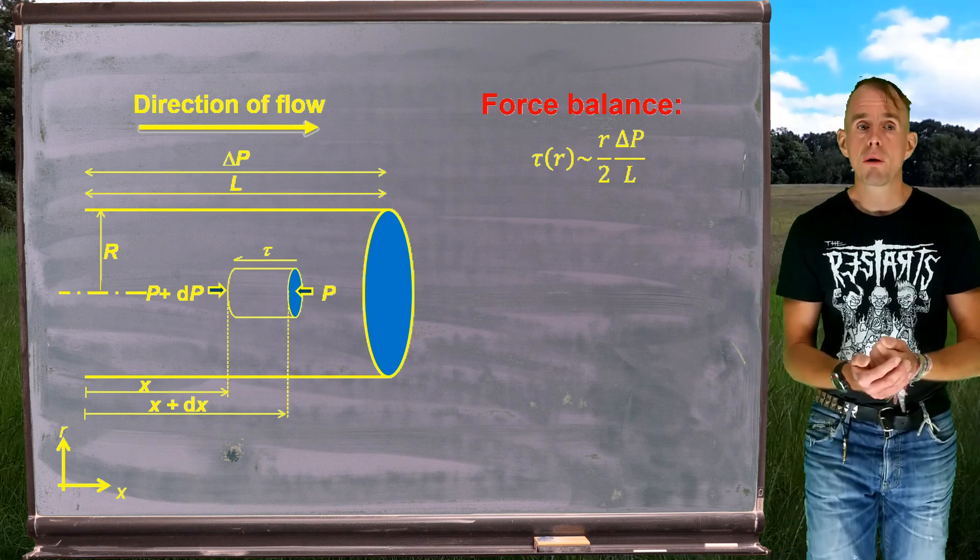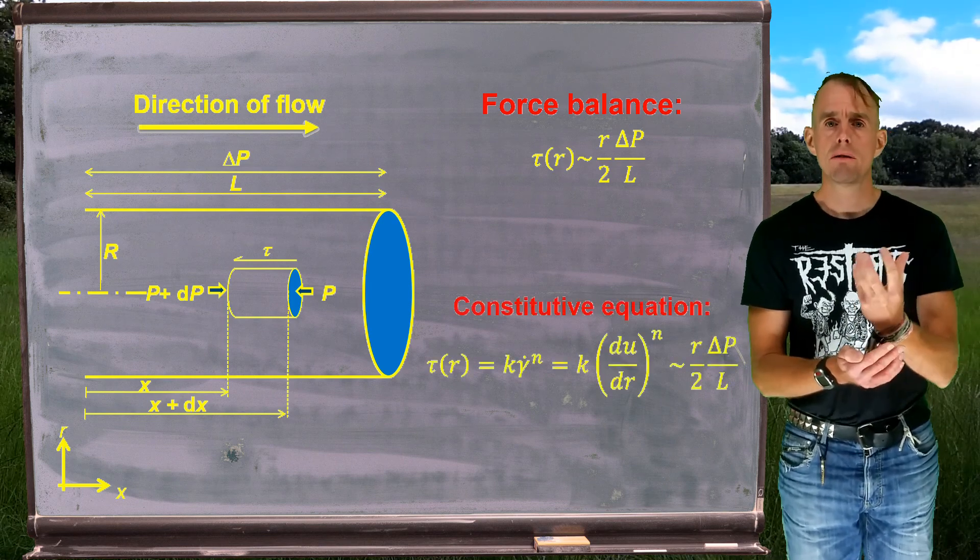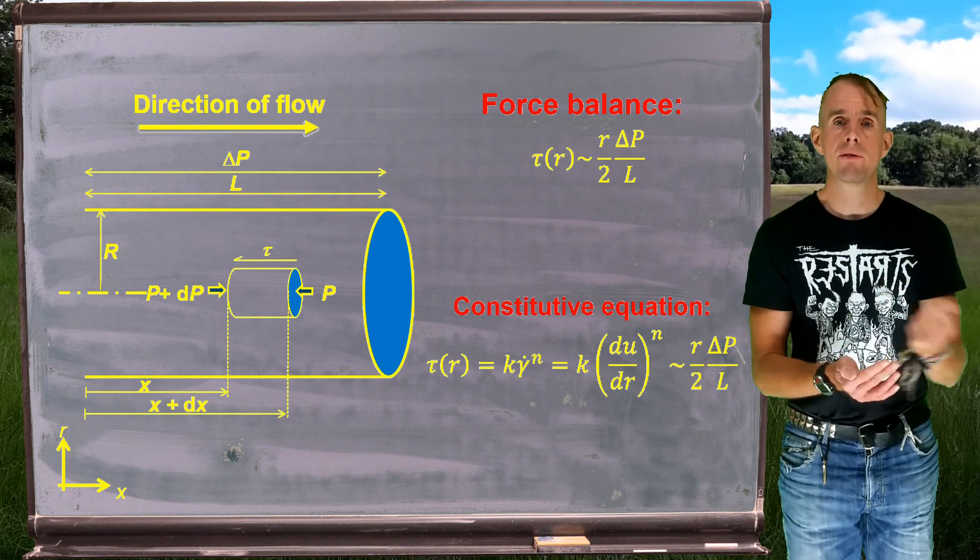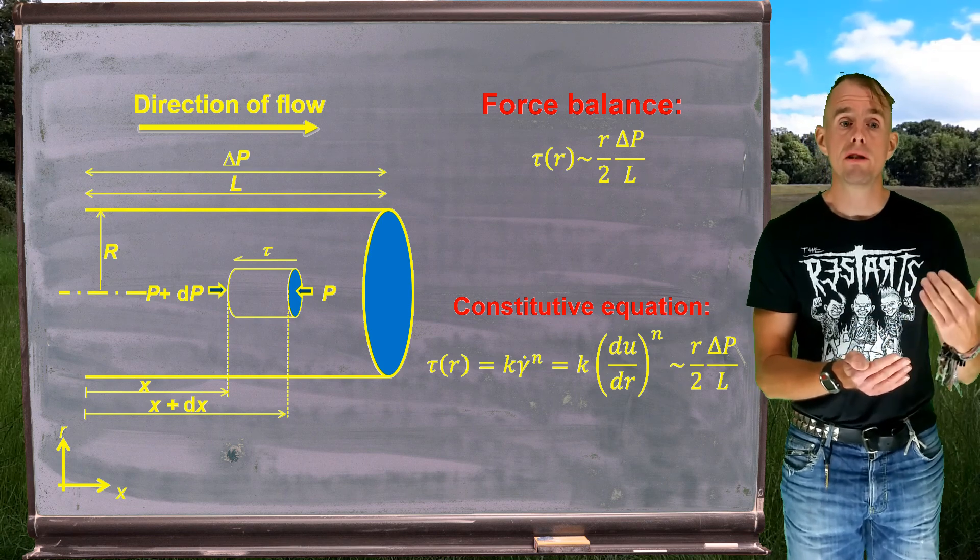So, if you recall what we did for the Newtonian fluid, we looked at tau and said that, using our constitutive law, we can relate tau to rate of deformation. For the Newtonian fluid, it was tau equals mu du by dr.